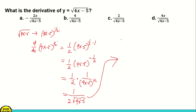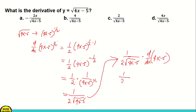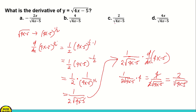We use the chain rule here. So it becomes 1 over 2 square root of 4x minus 5 times the derivative of 4x minus 5. The derivative of 4x minus 5 is 4. So we have 1 over 2 times square root of 4x minus 5 times 4, which gives us 4 over 2 square root of 4x minus 5. Simplifying, 4 divided by 2 gives us 2 over square root of 4x minus 5. Based on the choices, the answer is letter C.